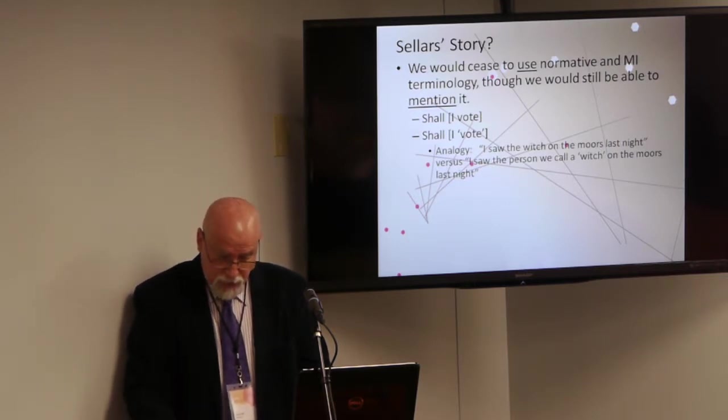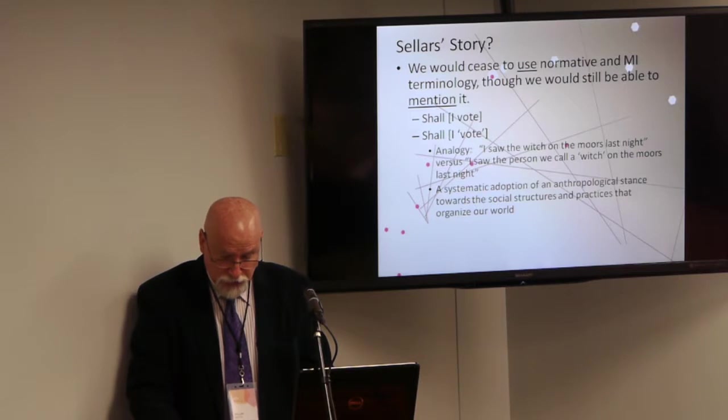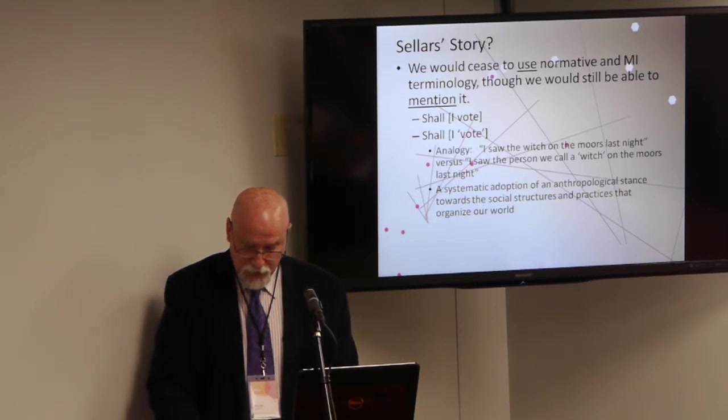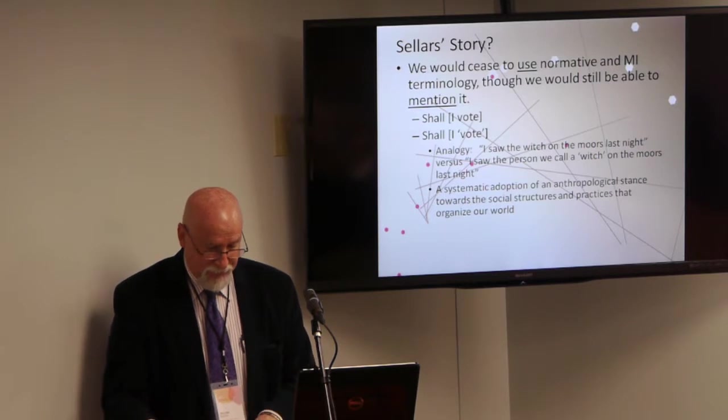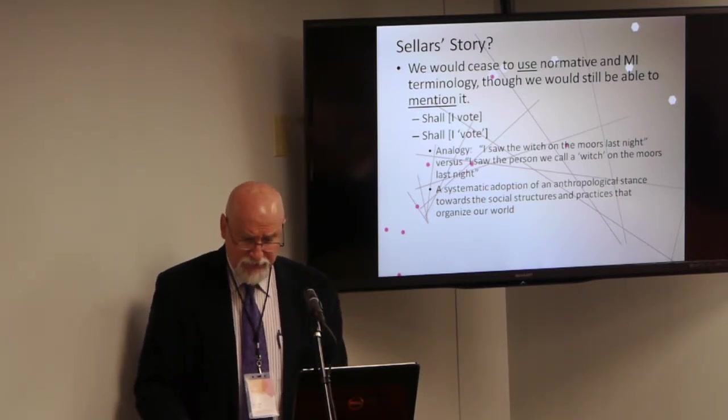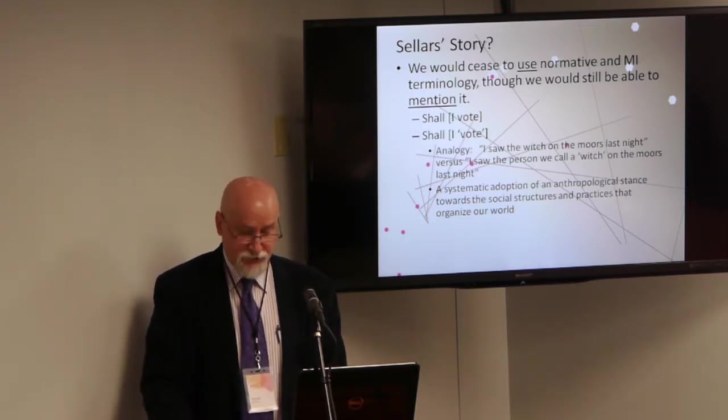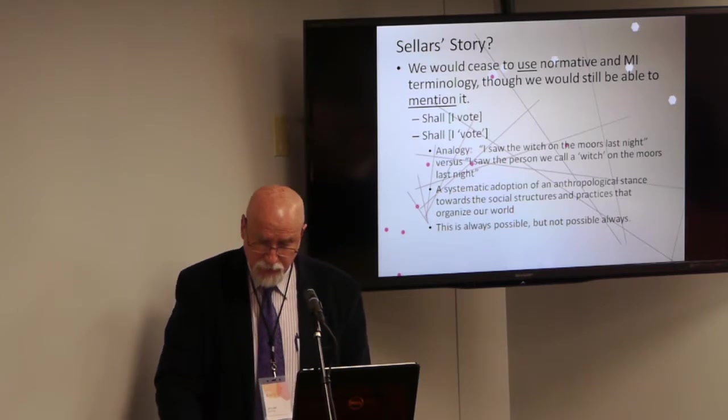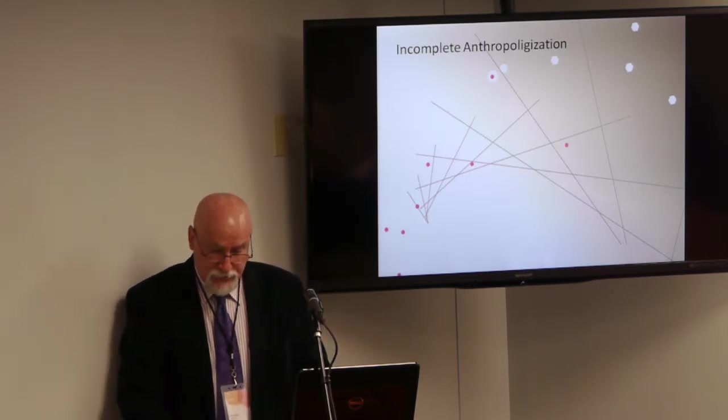Another way to describe this is to say that we would systematically adopt an anthropological stance towards the social structures and practices that organize our world, refusing to commit ourselves to the literal truth of the ordinary first order descriptive assertions made in the language of the manifest image. And this idea now seems muddled to me. I don't mean that one cannot adopt an anthropological stance towards the social structures and practices in which one is enmeshed. But I do not think that one could always adopt such a stance towards them, or that the anthropological stance could be one's only perspective on them.